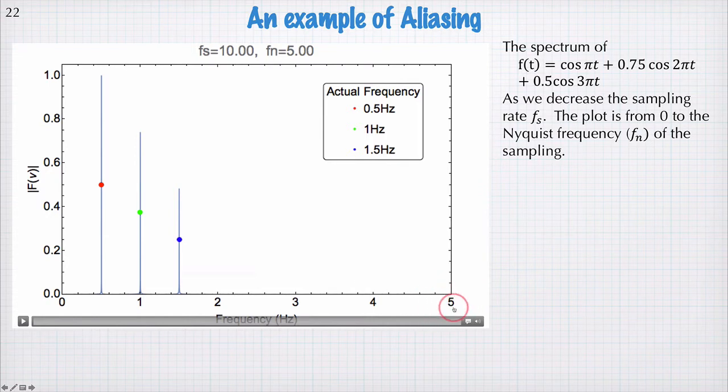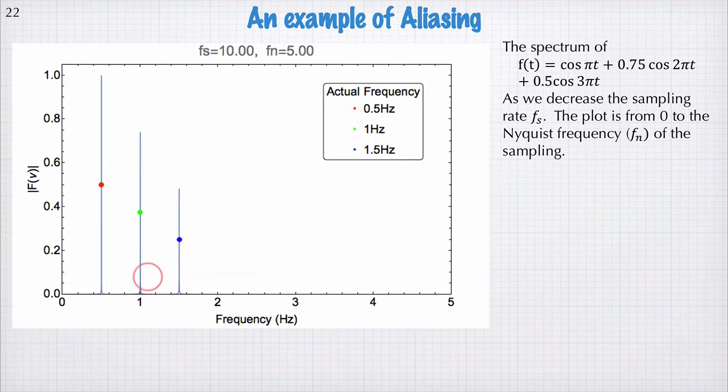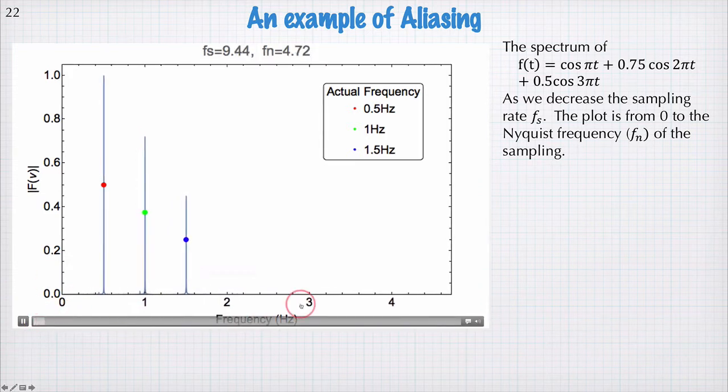And so if the Nyquist frequency here is five hertz, then I've sampled my data correctly and each of these frequencies here appears in the right place. Now if we decrease the sampling rate, then the Nyquist frequency will also decrease. So let's see what happens to these peaks as we do that.